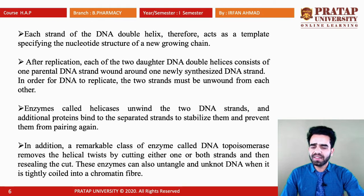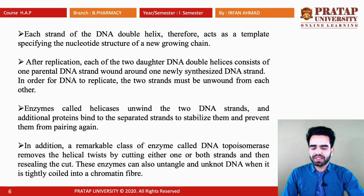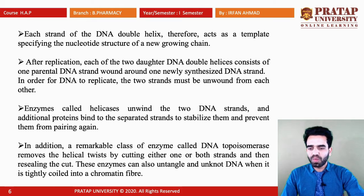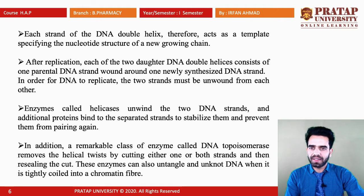In addition, DNA topoisomerases remove helical twists by cutting either one or both strands and then releasing the cut. These enzymes can also untangle or unknot DNA when it is tightly coiled in a chromatin fiber, so if the coiling is too tight, topoisomerase can help unwind it.